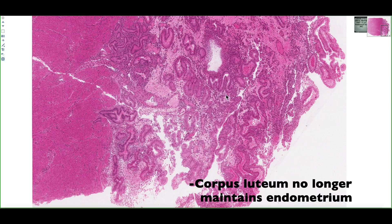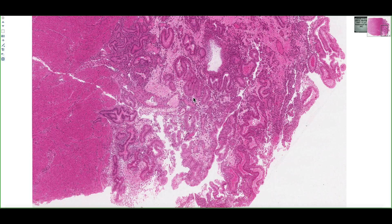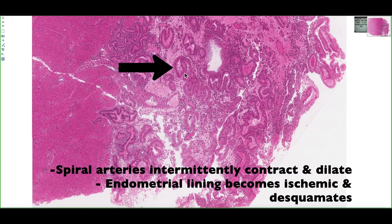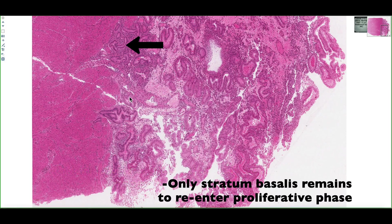Therefore, this endometrial lining no longer remains viable. The menstrual phase, if we look at the endometrial lining, is characterized by dilation of these spiral arteries. These spiral arteries intermittently contract and eventually become ischemic or necrotic, and then all this stratum functionalis layer will eventually be released in a process that's known as desquamation. As desquamation occurs and the stratum functionalis layer is sloughed off, the only viable layer of cells is going to be found in the stratum basalis layer.